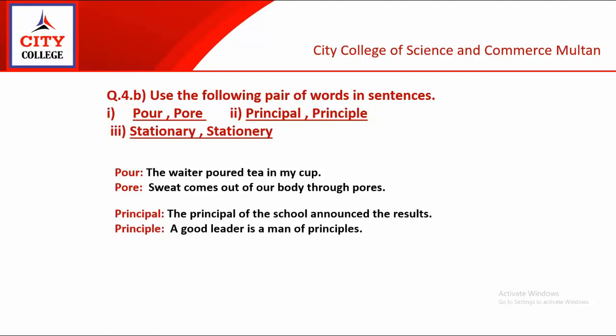Next pair: principal and principle. P-R-I-N-C-I-P-A-L and P-R-I-N-C-I-P-L-E. Aap yaad rakh saktay hain: jaise rule mein R-U-L-E hai, usi tarah usool wala 'principle' mein bhi L-E aayega. Doosra 'principal' main/bada/head ke matlb mein hota hai. Sentence: The principal of the school announced the results. Aur usool wale principal ke liye: A good leader is a man of principles.